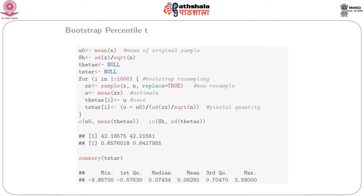Now we compute the bootstrap percentile-t confidence interval. We follow the same steps, but also compute the pivotal quantity. We define t_star which stores the pivotal quantity: for each bootstrap sample, t_star = (bootstrap mean - original mean) / (sd of bootstrap sample / sqrt(n)). For each bootstrap sample we calculate the mean and the pivotal quantity.